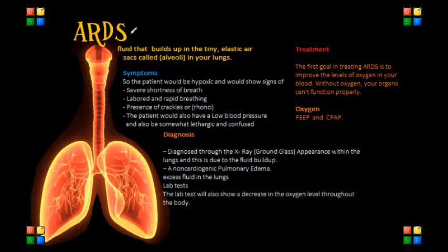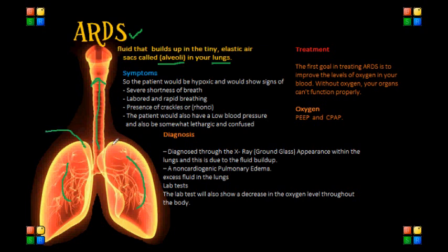Hello everyone. Today we'll be talking about acute respiratory distress syndrome, or ARDS. With acute respiratory distress syndrome, what occurs is that there's a fluid buildup in the tiny elastic air sacs in the lungs, which we call alveoli. The fluid will keep the lungs from filling with enough air, which means less oxygen reaches the bloodstream, and this can deprive the organs of the oxygen they need to function.